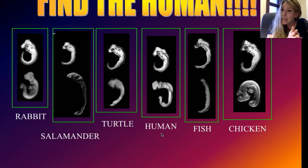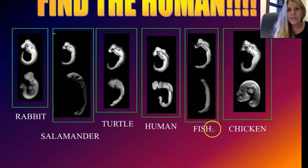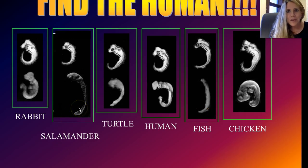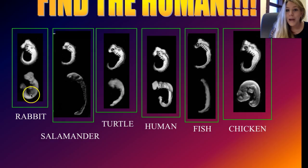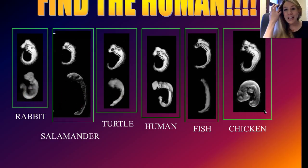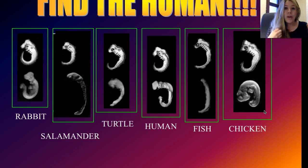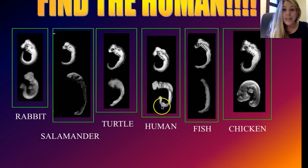The ones more closely related in evolutionary time look even more similar to each other. Check out the fish and the salamander, and compare the human to the other mammal — the rabbit. Here's a turtle and a chicken. If we shared a common ancestor, we'd all go through the same kinds of stages of development, and in fact that's true.